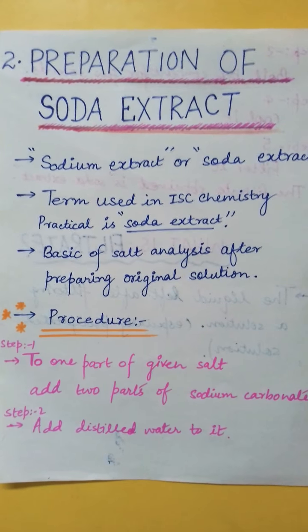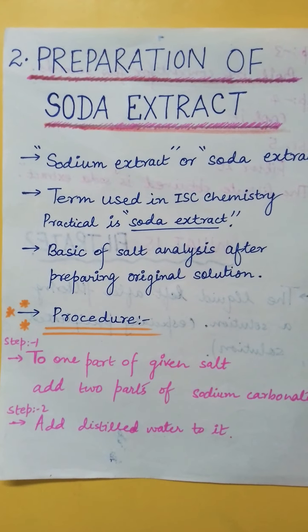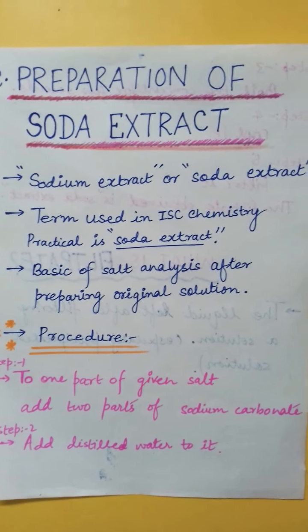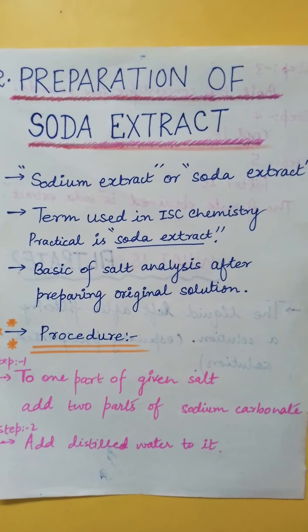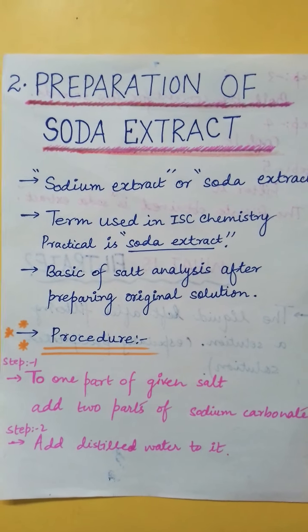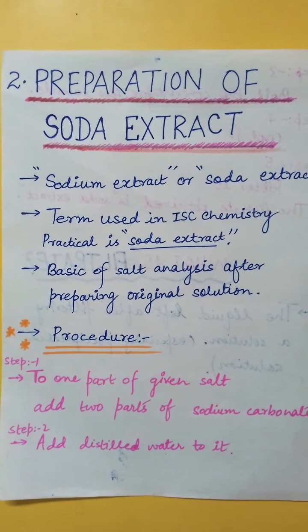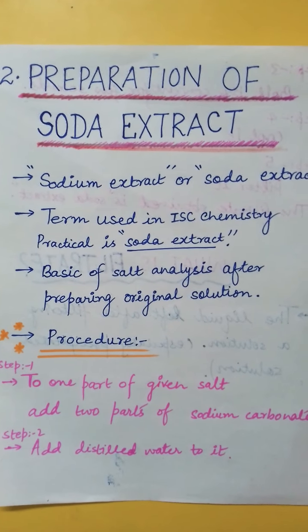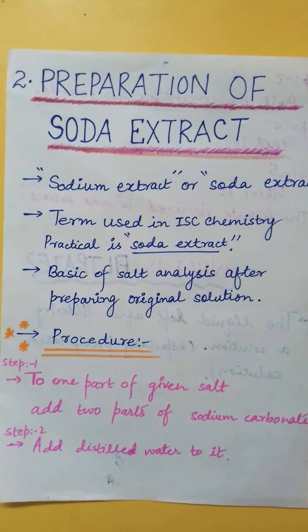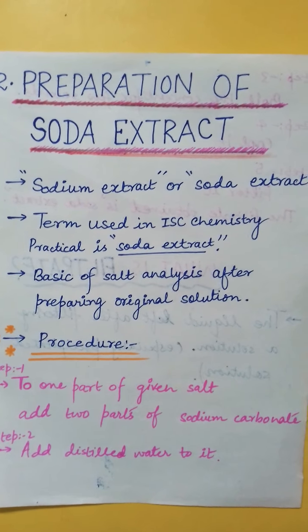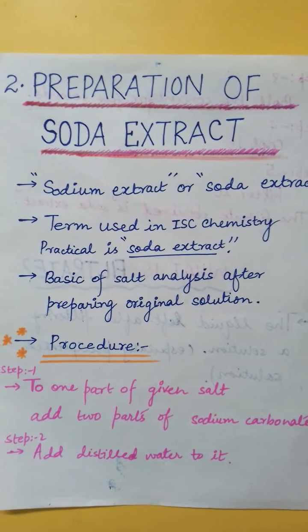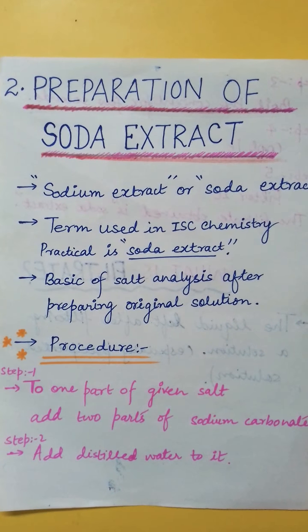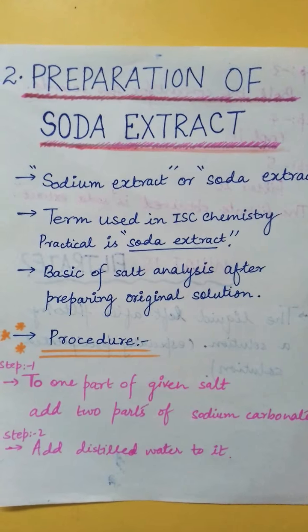The procedure to prepare it: in step 1, take one part of the given salt and two parts of sodium carbonate in a test tube. The easy way is to use a spatula — take one part of the salt given by the examiner, and two times more than that of sodium carbonate.